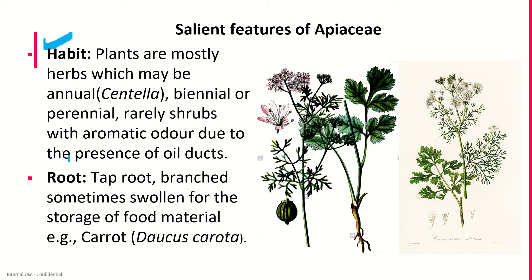APSC, also known as Umbelliferae, is known to have widespread economic importance. Apium graveolens is used as a vegetable; its roots and seeds are used for medicinal purposes. The fruits are used for extracting valuable oil and the seeds are used as spices.